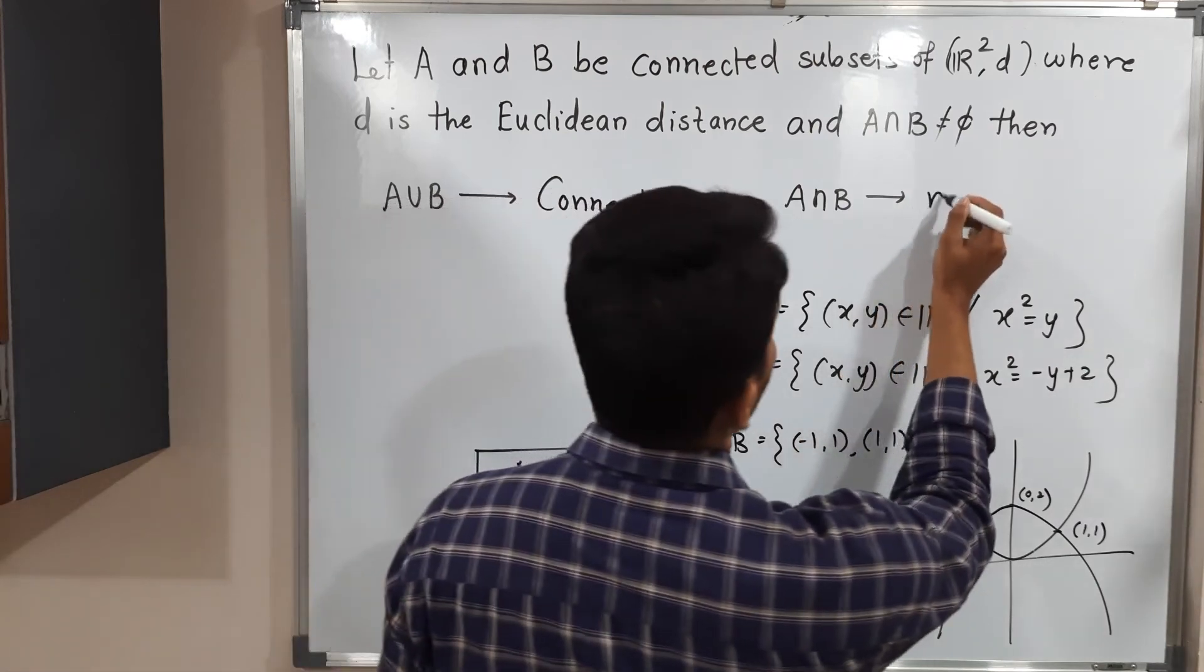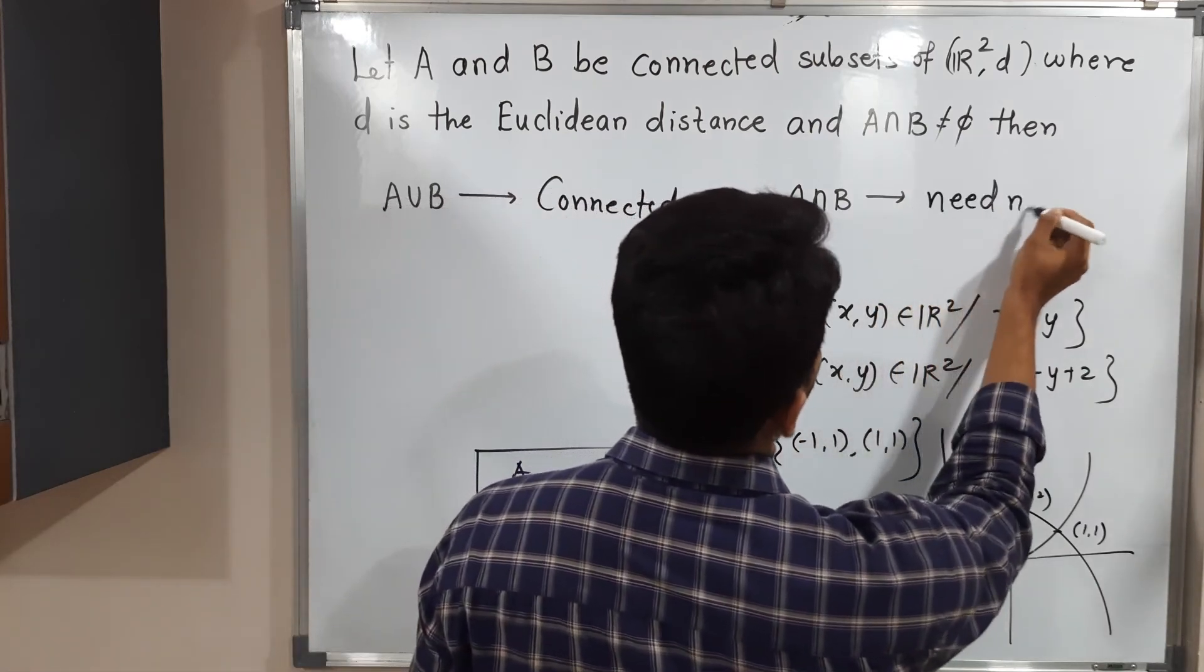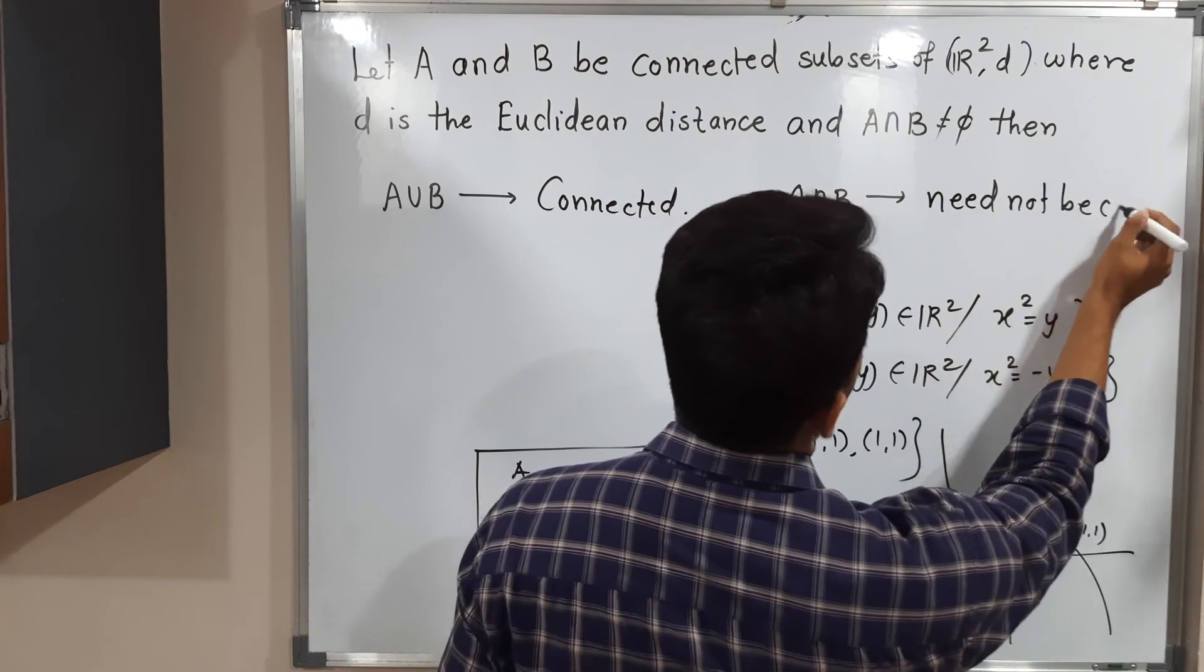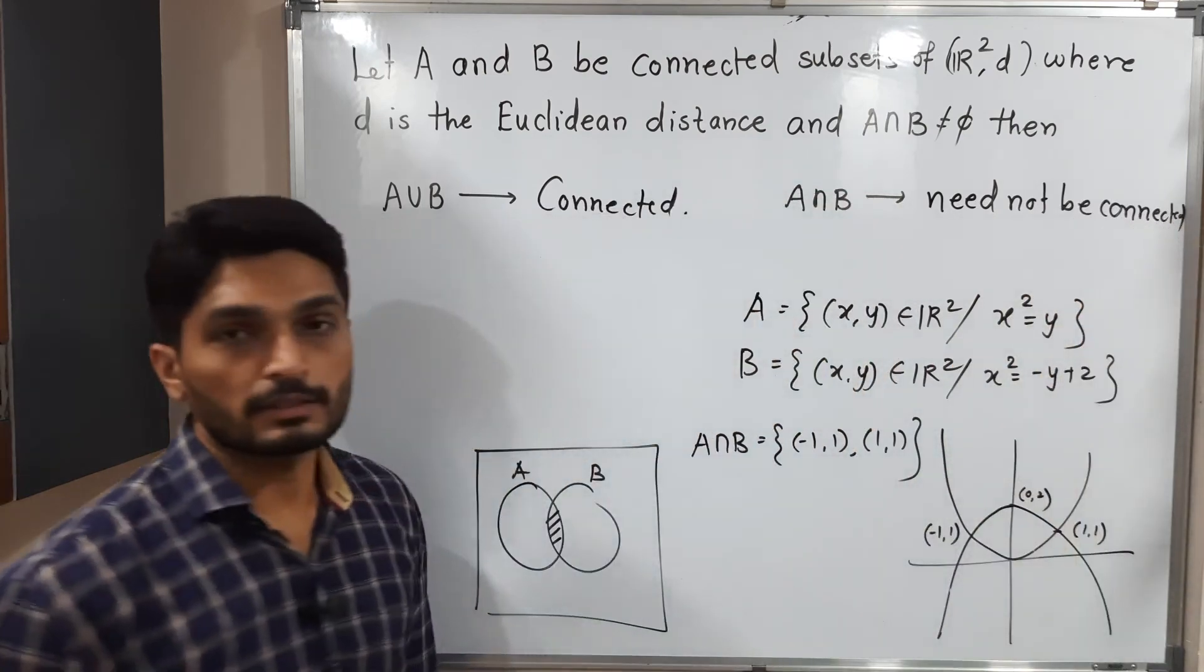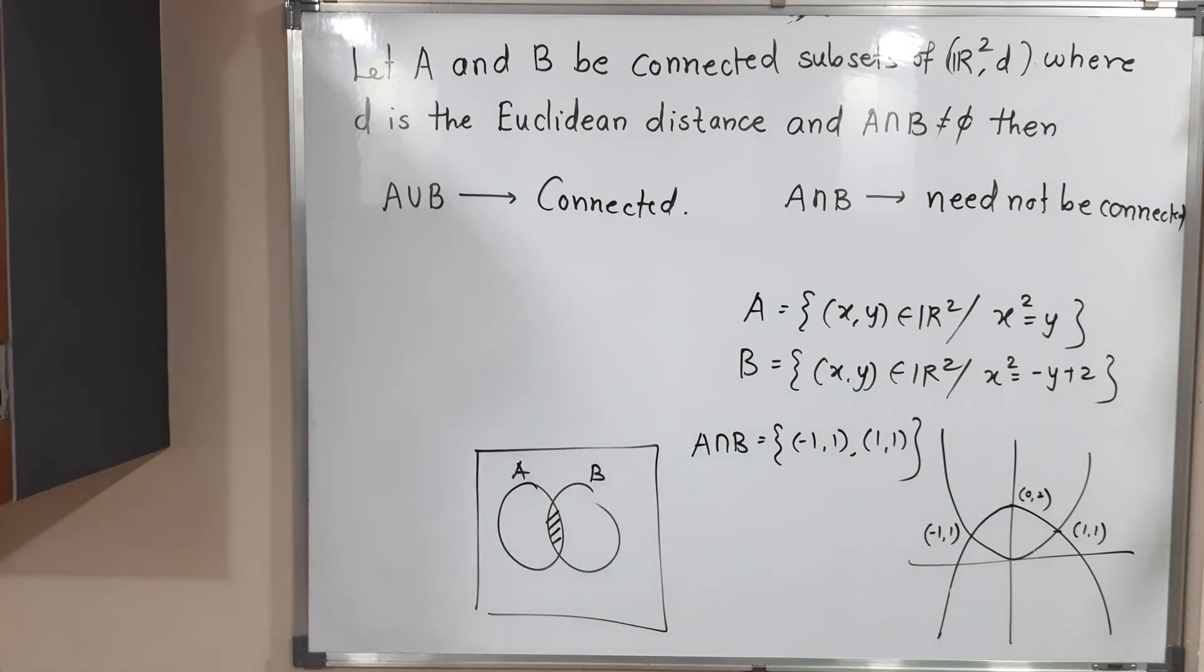So I will mention: A intersection B need not be connected. This is our conclusion. You can make a screenshot of it and then we will stop. Thank you, bye-bye.